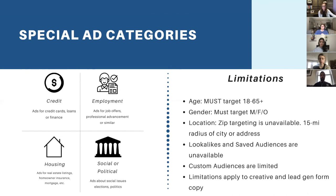The limitations are: ages must be from 18 to 65 plus and you can't edit or touch anything there. Gender must be male, female, or other. Zip targeting is unavailable, and lookalike and saved audiences are also unavailable. Custom audiences you can apply, but it's limited with how Facebook utilizes it — they don't disclose how they use it, but say you can add it and they will use it how they deem fit. There are also limitations to creative and copy. They don't have a full definition of what those restrictions are, but tell advertisers they have more authority to deny these ads.